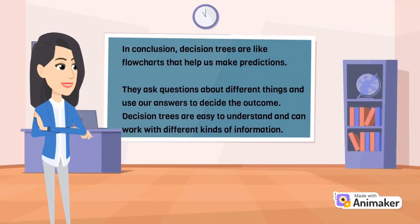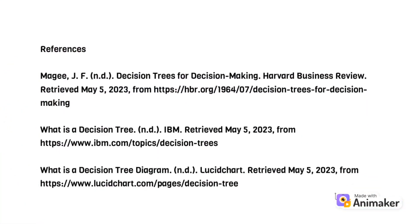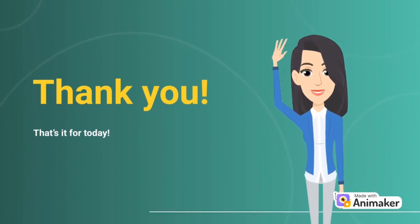In conclusion, decision trees are like flowcharts that help us make predictions. They ask questions about different things and use our answers to decide the outcomes. Decision trees are easy to understand and can work with different kinds of information. However, we need to be careful because they can sometimes give overly specific answers and may not work well with new data. Overall, decision trees are useful tools for making predictions in a clear and organized way. That's all from me. Thank you for watching.